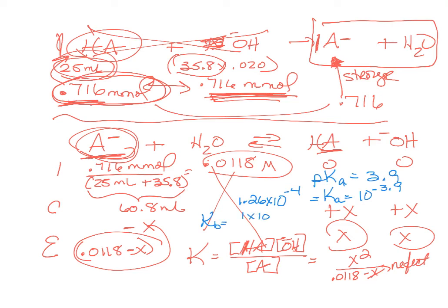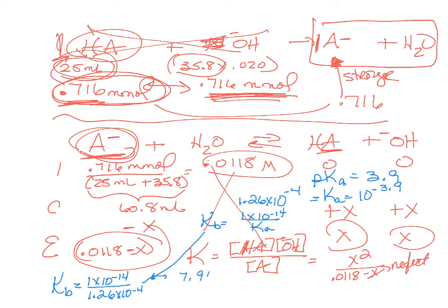To find Kb: it's 1 times 10 to the minus 14 over Ka, which is 1.26 times 10 to the minus 4. That gives us a Kb value of 7.94 times 10 to the minus 11. That's a really small Kb, which confirms we can neglect x.